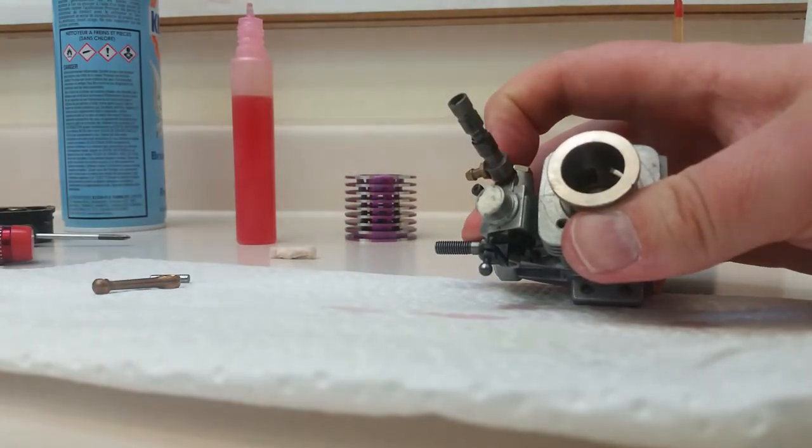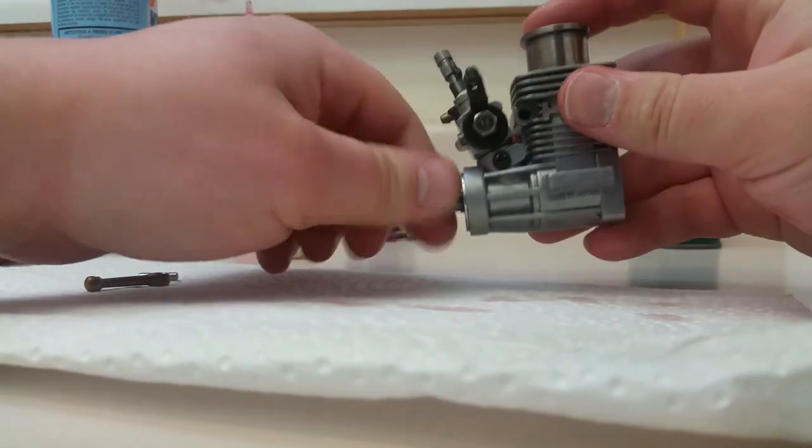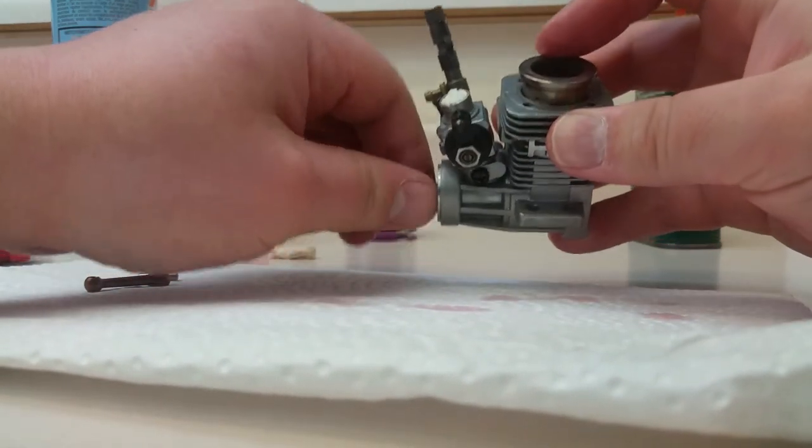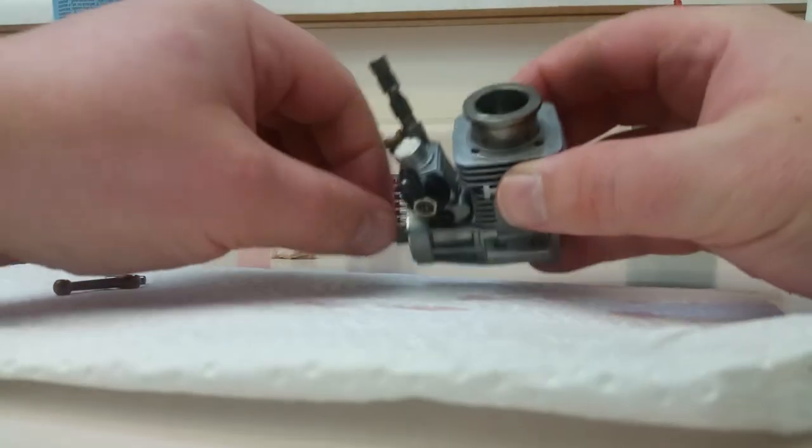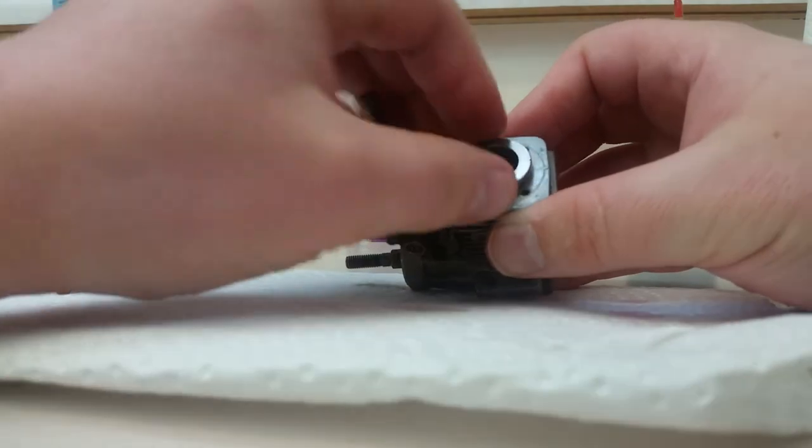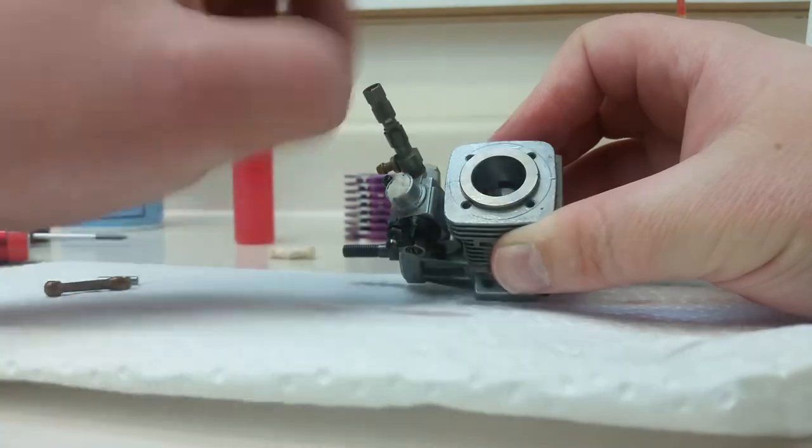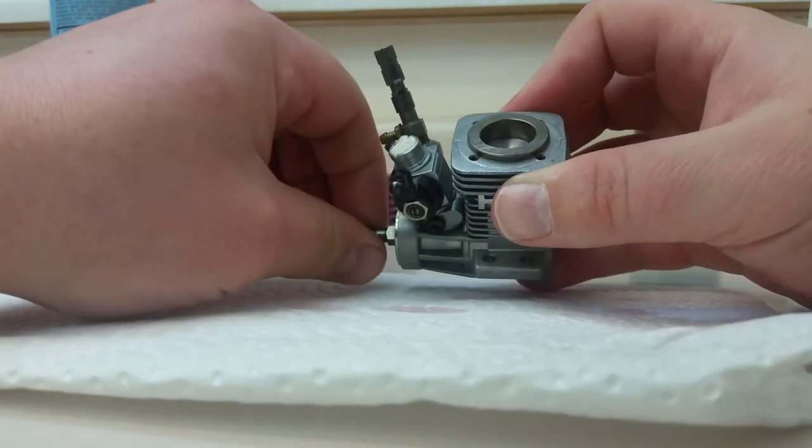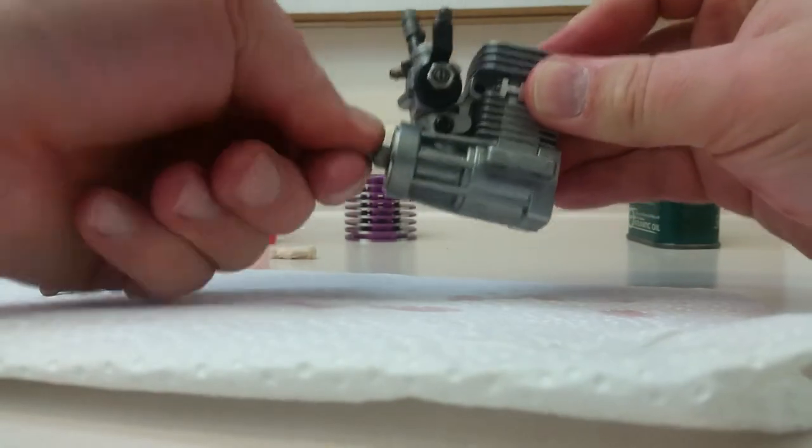So now our piston and sleeve are ready to go back together. Turn the sleeve, line up the notch in the sleeve with the line in the block. Make sure everything turns free. It won't turn over all the way because it's a brand new piston and sleeve, so there's a lot of pinch there.